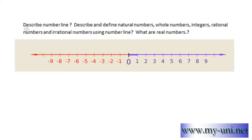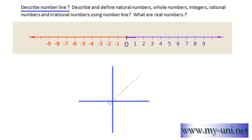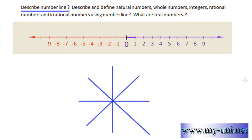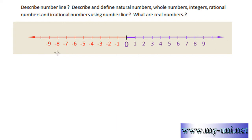First thing first — describe the number line. A number line is traditionally a horizontal line, but it can also be a vertical line, a line in any direction, or at any angle. But as I said, the most frequent way to represent a number line is a horizontal line.